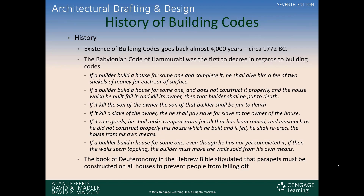If it killed the son of the owner, the son of that builder shall be put to death. If it kills a slave of the owner, then he shall pay slave for slave to the owner of the house. If it ruined goods, he shall make compensation for all that has been ruined, and inasmuch as he did not construct properly this house which he built and it fell, he shall re-erect the house from his own means.